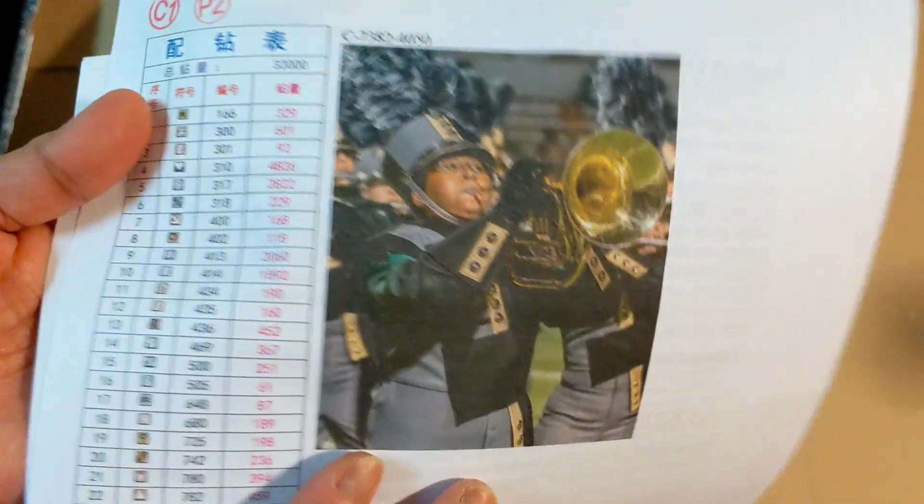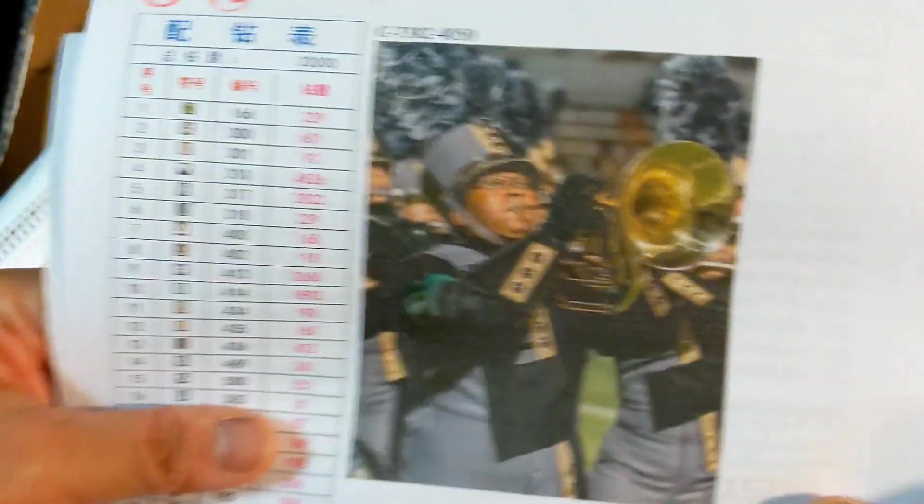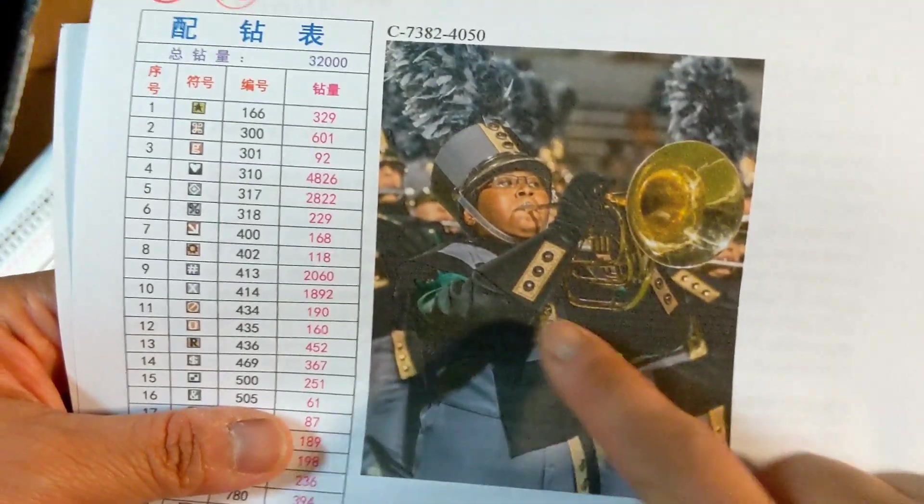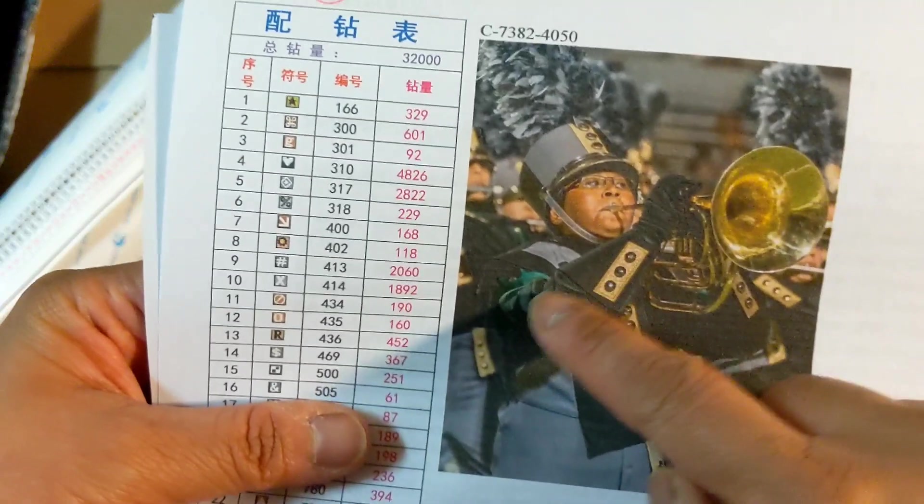This is the custom painting that I made for my son. It's a band picture. Look at this painting. You can only see grays, blacks, and greens, but they gave me 42 colors.